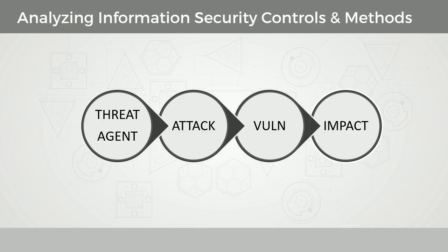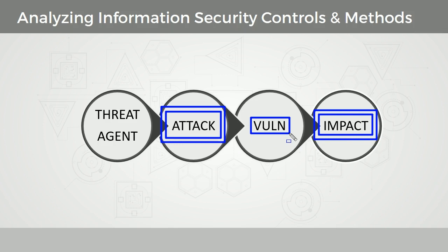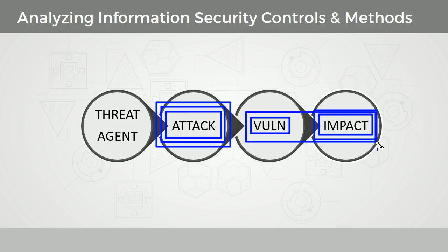We have these different control categories, but there's a process here. A threat agent or threat actor creates the attack, the exploit, the malware, and that attack takes advantage of a vulnerability or weakness, and that results in impact. A deterrent control reduces the likelihood of an attack. A compensating control also reduces the likelihood or the occurrence of an attack. A corrective control decreases or lowers the impact that resulted from the vulnerability. A preventative control also reduces impact and protects vulnerability. The detective control will discover the attack and also trigger an alert to send input to the preventative control, which can protect vulnerabilities and reduce impact.